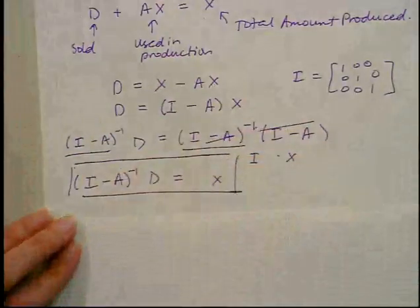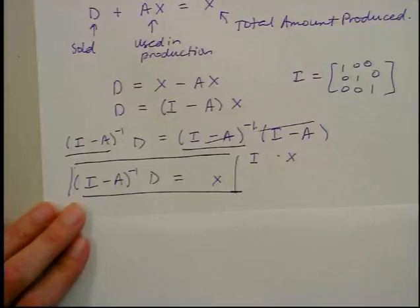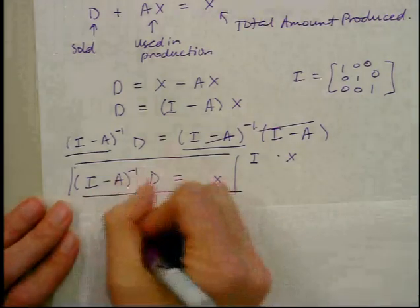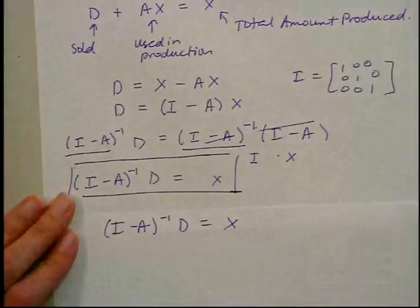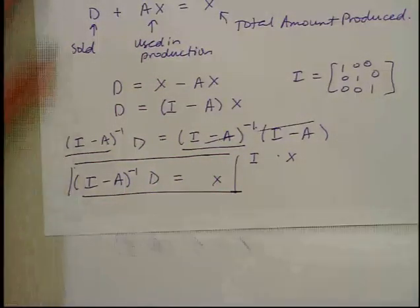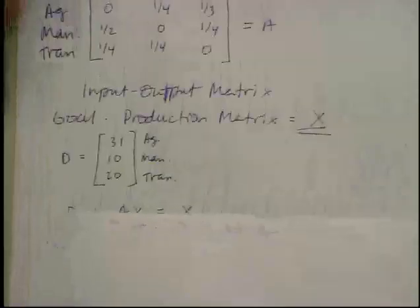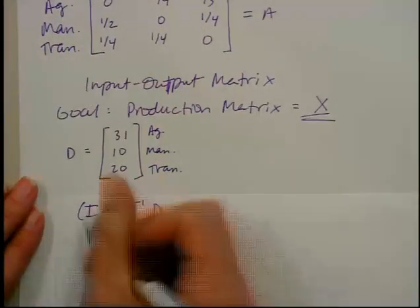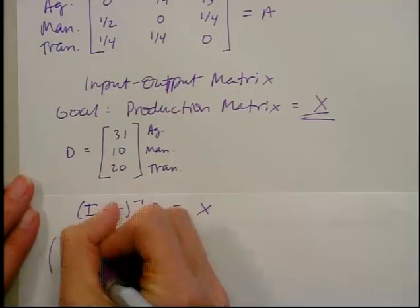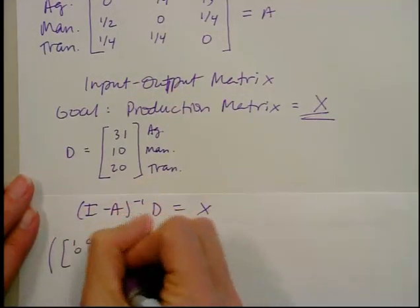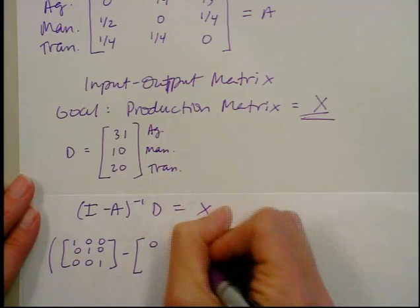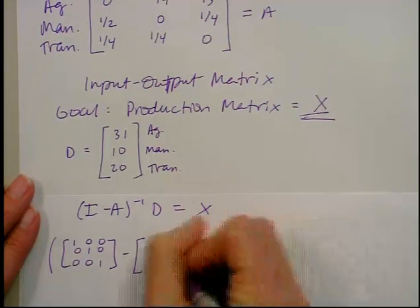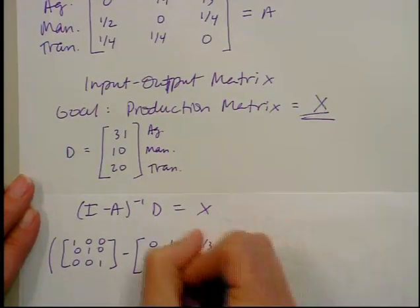Let's go back to our example. I want to figure out what the production matrix is for our scenario. I'm going to do a lot of this with the calculator since it's a three by three matrix — just a lot of work. What I want to do is take the three by three identity matrix and subtract the input-output matrix.